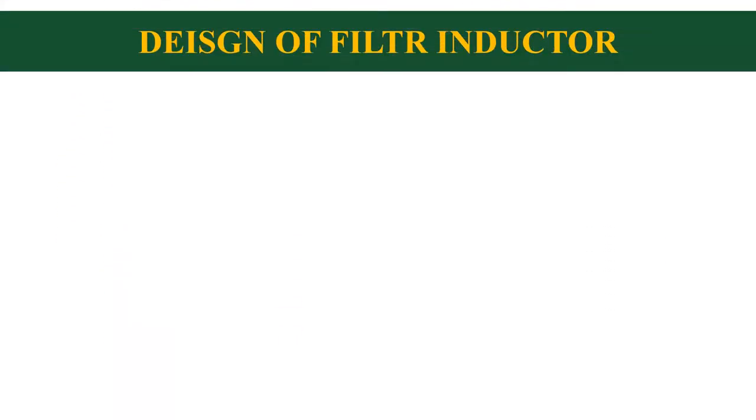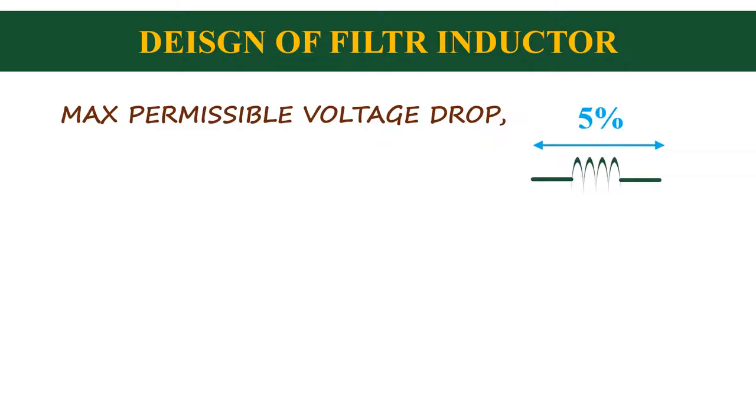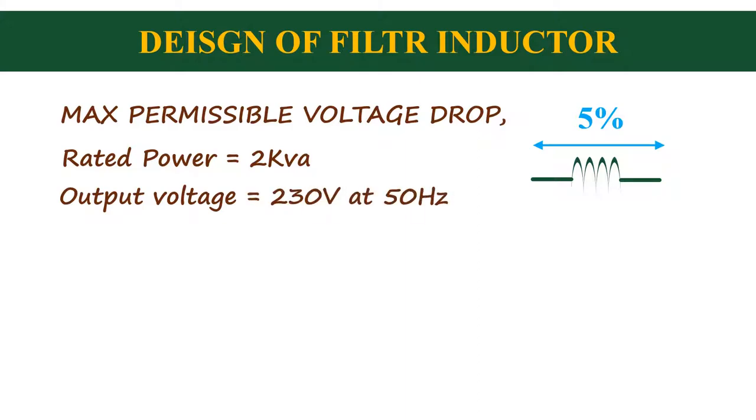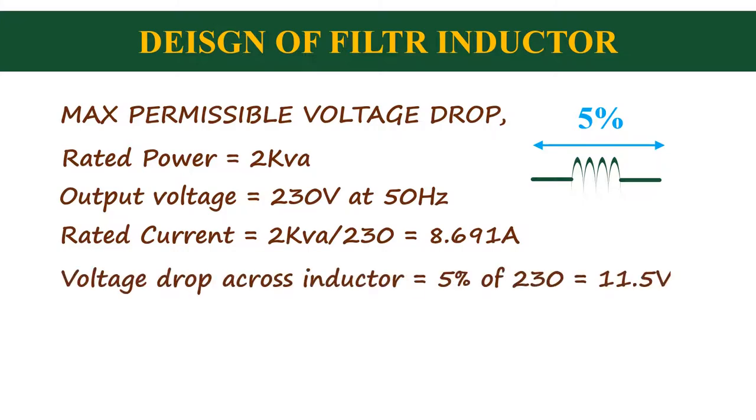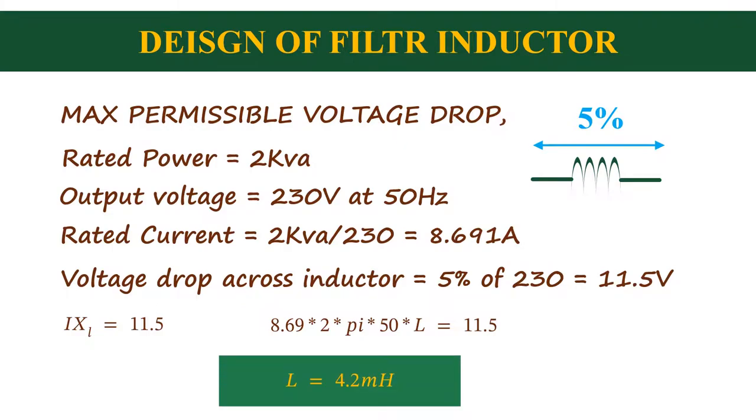Now I will tell you how to design the value of the inductor. The design of the inductor is based on the maximum permissible voltage drop across it. For this design, I am considering a maximum voltage drop of 5 percentage of the grid voltage. Now let me give the specification of Statcom. Maximum power is 2 kVA. The output voltage is 230 volt at 50 hertz. Rated current is 2 kVA divided by 230, that is 8.69 amps. Now the voltage drop across the inductor is equal to 5 percent of 230, that is 11.5 volt. As we know, equation for the voltage drop across the inductor is I into XL. Equate this with 11.5. Substitute all the values, and then we will get inductance as 4.2 mH.